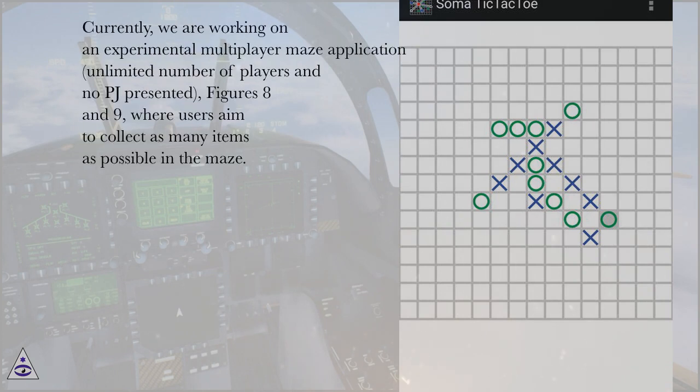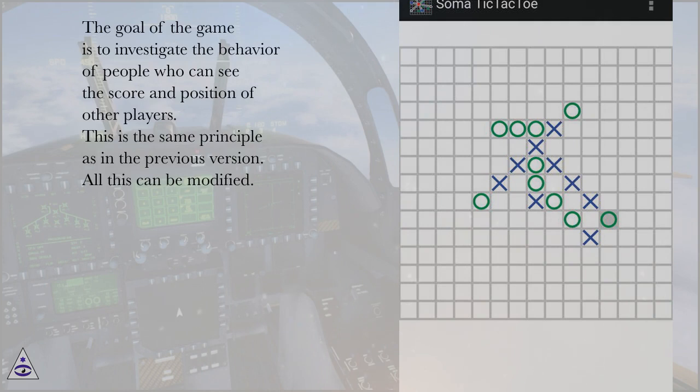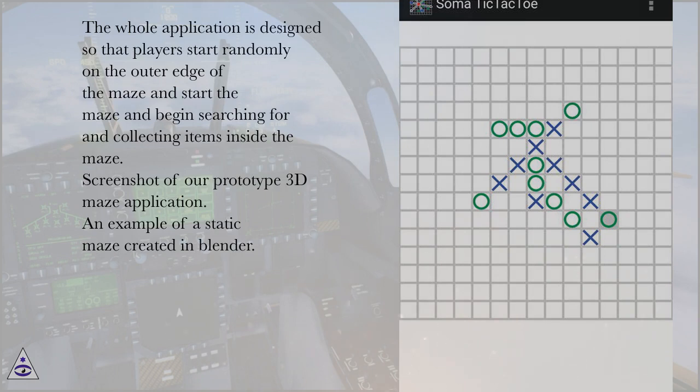Currently, we are working on an experimental multiplayer maze application, unlimited number of players, figures 8 and 9, where users aim to collect as many items as possible in the maze. The goal of the game is to investigate the behavior of people who can see the score and position of other players. This is the same principle as in the previous version. All this can be modified. The whole application is designed so that players start randomly on the outer edge of the maze and begin searching for and collecting items inside the maze.